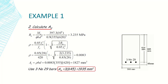For a single layer of reinforcement, d is assumed equal to h minus 65 mm. So d = 685 − 65 = 620 millimeters. Substituting all values into the denominator, I can determine Rn = 3.235 megapascals.